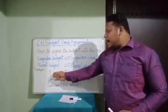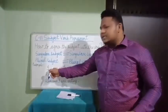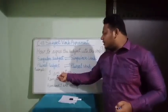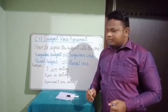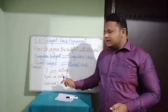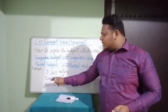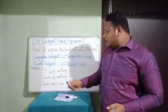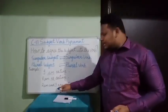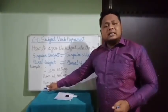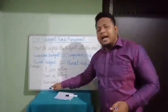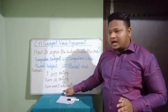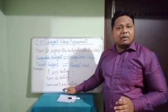The first example is 'I am eating.' Here the subject is 'I,' which is a singular subject, so we use the singular form of the verb: 'am.' Example two: 'Ram is eating.' Here the subject is Ram, and 'is' is used, which is the singular form of the verb. In the third sentence, 'Ram and I are eating,' the subject is plural — Ram and I makes a plural subject — so the verb used is 'are,' which is the plural form of the verb.